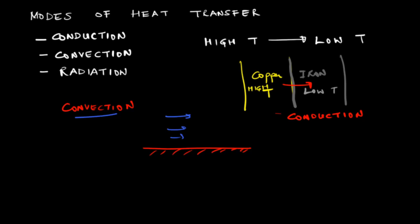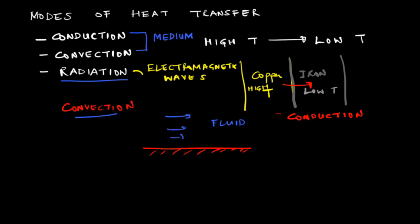Both conduction and convection require a medium for heat transfer. However, there is a third mode — radiative heat transfer — which can transfer heat without the need of any medium. That means heat can be transferred due to radiation even in empty space or vacuum. Radiation involves heat transfer through electromagnetic waves. For example, heat is transferred from the sun to the earth in the form of radiation. Although transmission of radiation does not require a medium, emission and absorption of radiation does require a substance to be present.